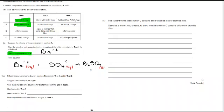Okay, moving on to part B. Different gases are formed when solution B reacts in test 1 and in test 2. Suggest the identity of each gas and give the simplest ionic equation for the formation of the gas in test 2. So for test 1, where we have got effervescence, we're adding sulfuric acid, we're adding an acid and we're getting effervescence. This is a test for carbonate ions. So the gas that we are going to make here is carbon dioxide.